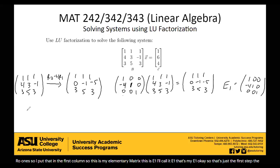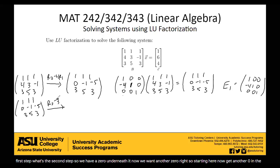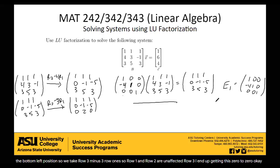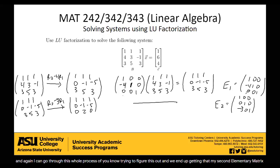That's the first step. Now we want another 0 in the bottom left position, so we take row 3 minus 3 times row 1. Row 1 and row 2 are unaffected, and row 3 becomes 0, 2, 0. My second elementary matrix E2 is: 1, 0, 0; 0, 1, 0; negative 3, 0, 1 — because I'm taking negative 3 of row 1 and 1 of row 3.